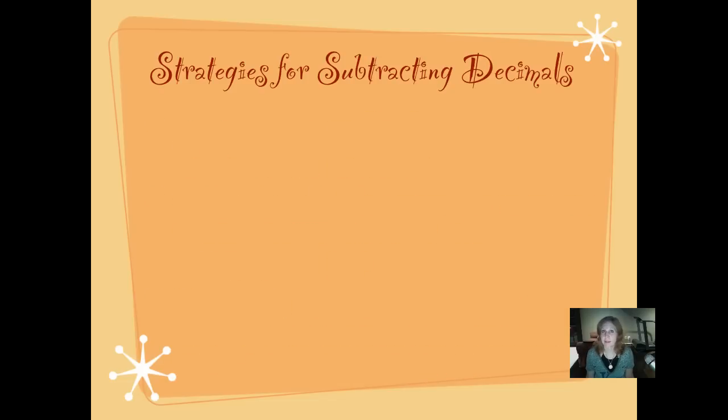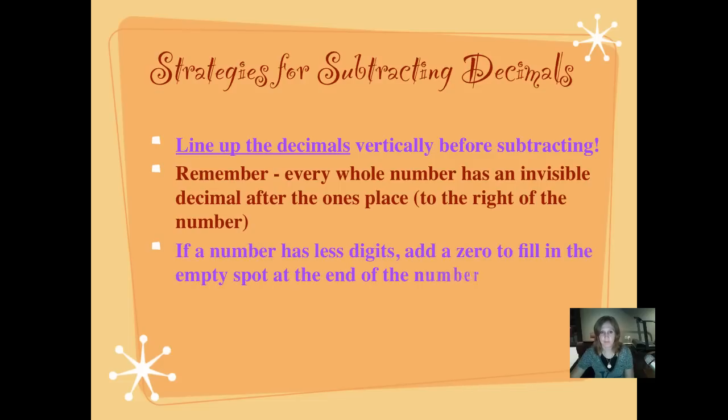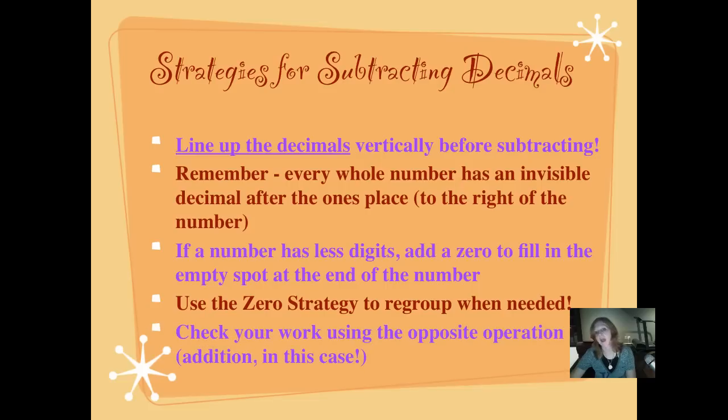Here are our strategies for subtracting decimals. Remember, you don't have to write everything down, but write them down in a way that you will remember them. Line up your decimals vertically before subtracting. Remember, every whole number has an invisible decimal after the ones place, just to the right of the number. If a number has less digits and there are empty place value positions, you can always add a zero to fill in that empty spot. Use that zero strategy that we learned with whole numbers to regroup when needed. And check your work using the opposite operation. We're using addition this time.